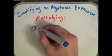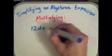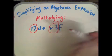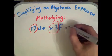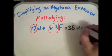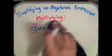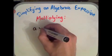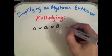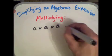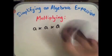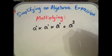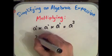Another example: 12de multiplied by 3f. 12 times 3 gives us 36, then d, e, and f are tagged on the end. Now let's look at a times a times a. Most people would write 3a, but that would only be true if we're adding. Here we have a times a times a, which gives us a cubed, or a to the power of 3.